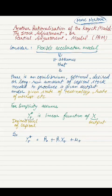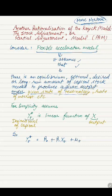What is the flexible accelerator model? The flexible accelerator model assumes that there is an equilibrium, optimal, desired, or long-run amount of capital stock needed to produce a given output under a given state of technology and rate of interest. For simplicity, let's assume this desired level of capital is a linear function of some output, which we are giving the name X.